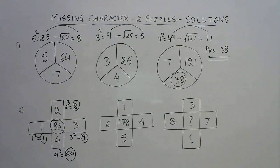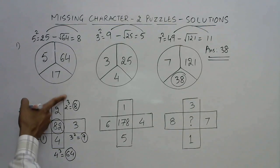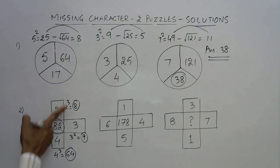So 64 plus 10 is 74, plus 8 gives you the number in the center, 82. So the rule which is being followed in this case is to take the squares of the number on the left and the right.